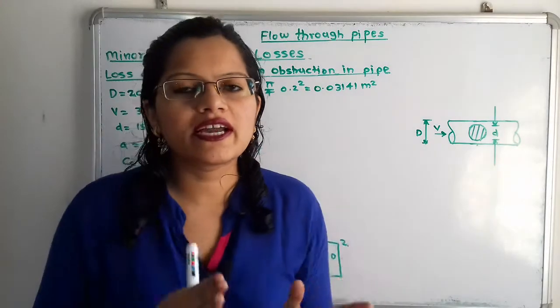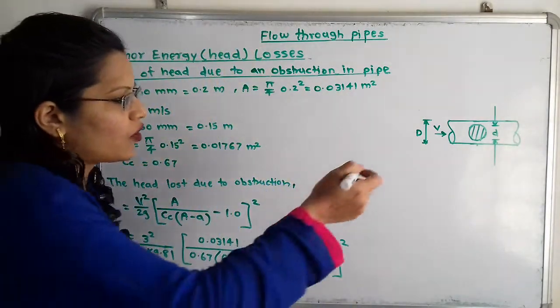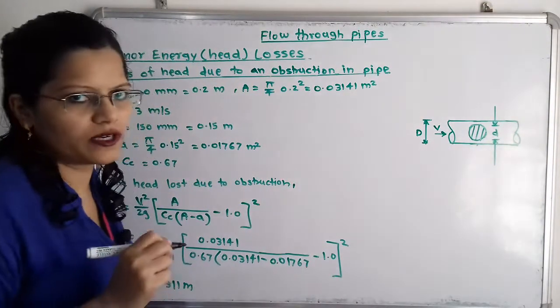Now we have to find out the head loss due to obstruction in the pipe, because when water is flowing through this pipe there is obstruction due to this circular plate.